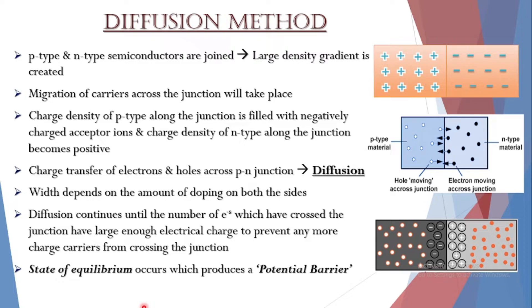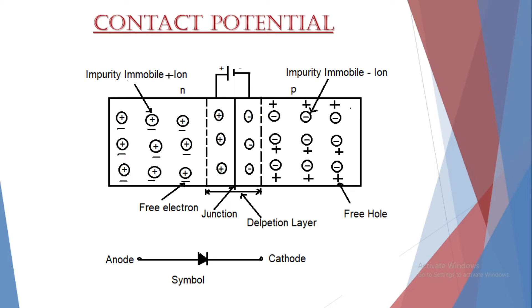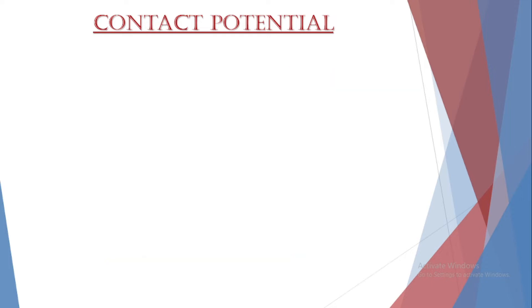To summarize: when P and N type semiconductors are brought together, a large density gradient is produced, which through diffusion finally brings about a state of equilibrium, producing a potential barrier around the area of the junction. Next, depending on this, we can study about the contact potential — that is, the area where P and N type semiconductors are brought in contact, forming the junction.